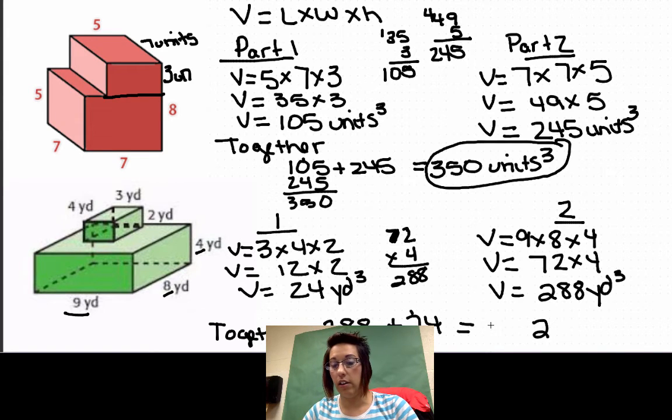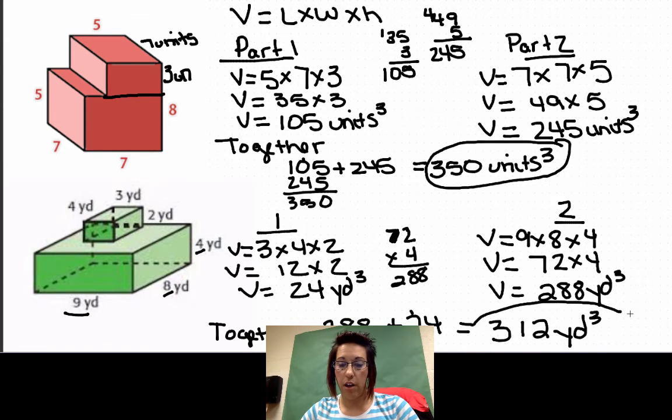So 288 plus 24 equals 312 yards cubed would be my answer to this composite figure.